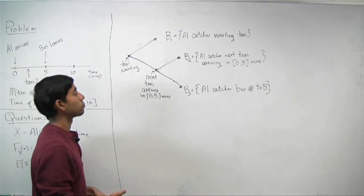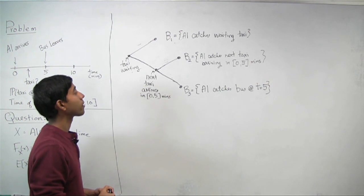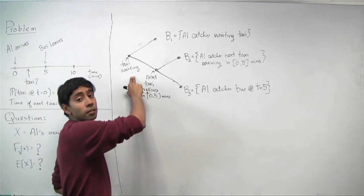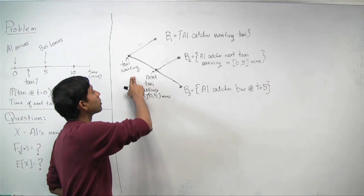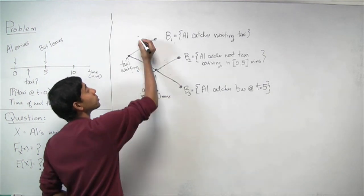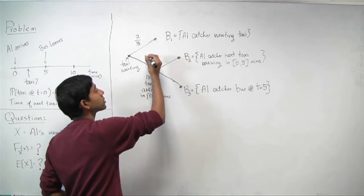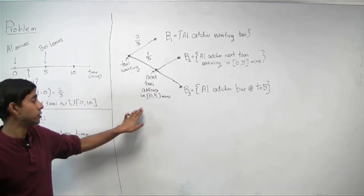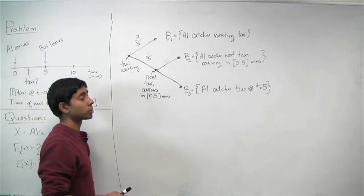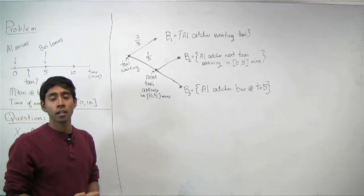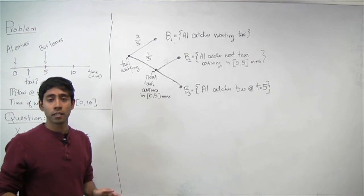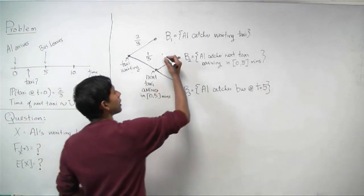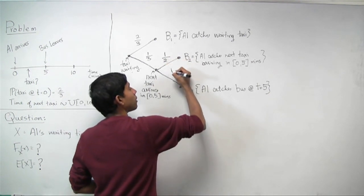Whether or not B1 happens depends on whether a taxi is waiting for Al. If the taxi is waiting, which happens with two-thirds probability, B1 happens. Otherwise, with one-third probability, we check whether a taxi arrives between zero and five minutes. Since the next taxi is uniformly distributed between zero and ten minutes, half the mass is between zero and five, and the other half between five and ten — so each branch has probability one-half.